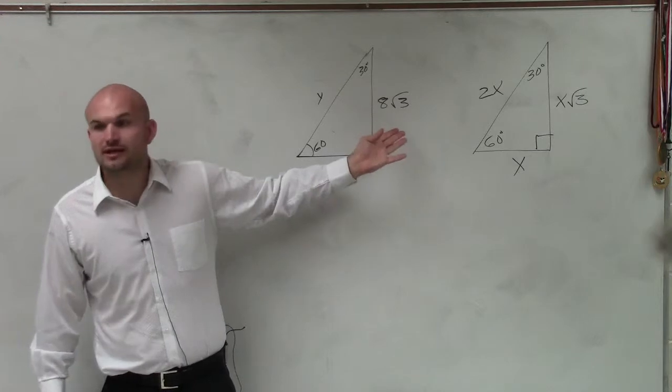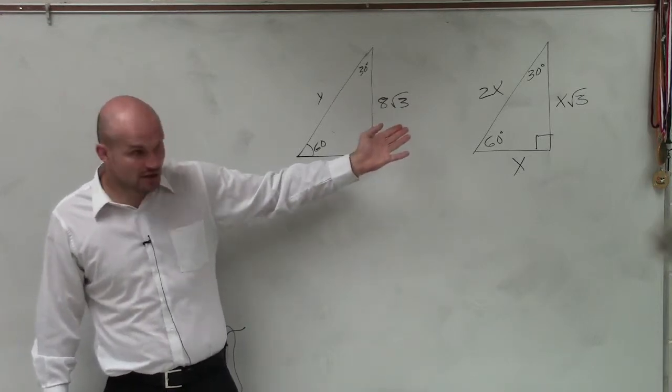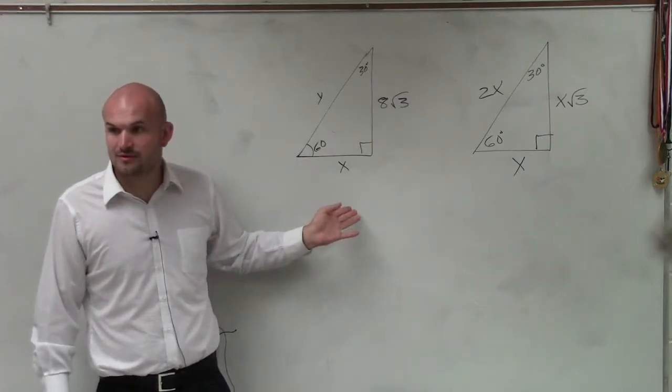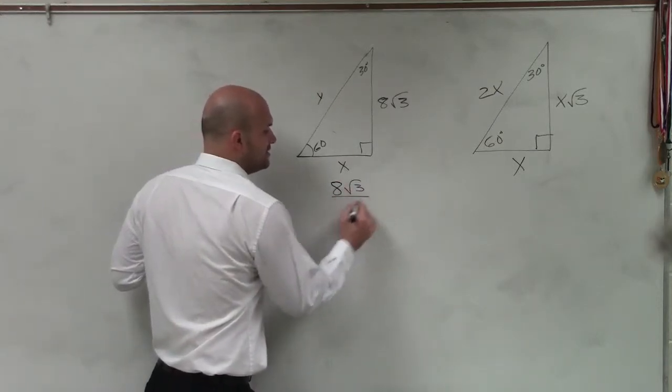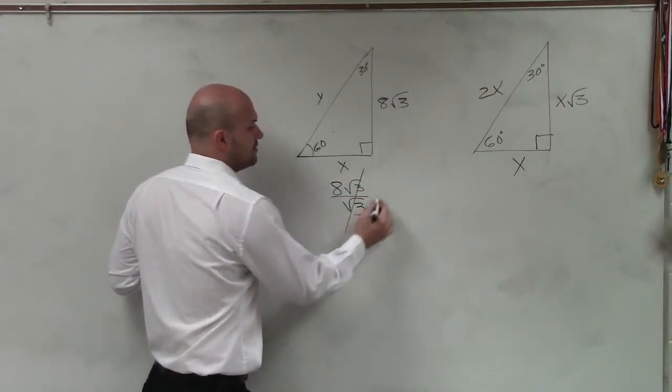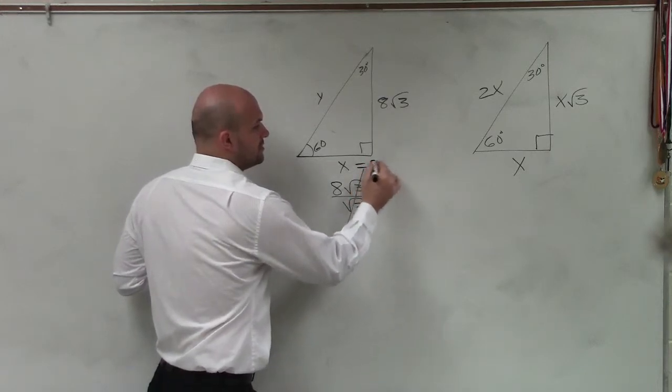And what am I given here? What is this, the long leg or the short leg? It's the long leg. So to find the short leg, I have to divide by the square root of 3. So 8 square root of 3 divided by the square root of 3 is just equal to 8.